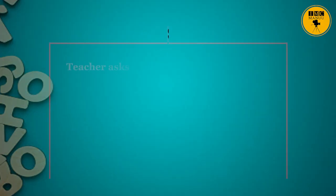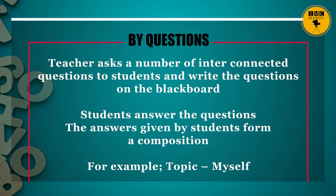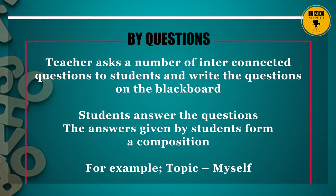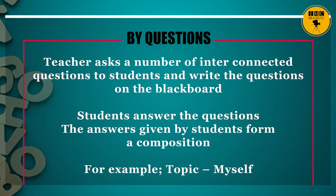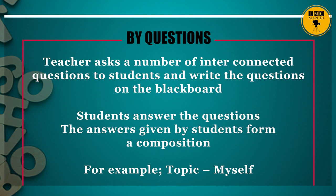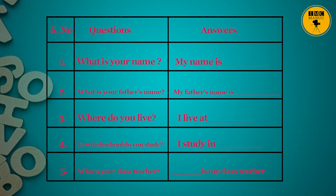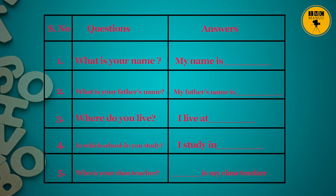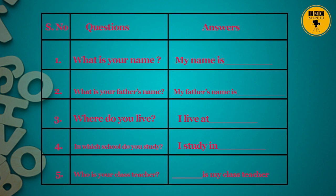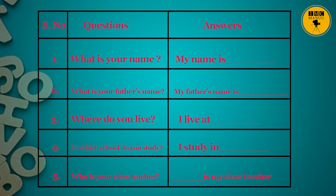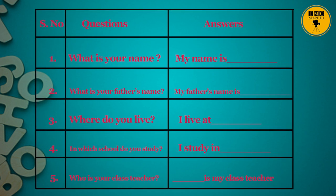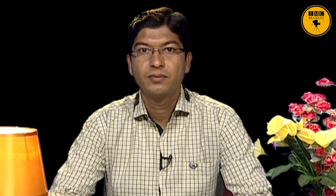Another technique of developing guided composition is by questions. The teacher asks a number of interconnected questions to students and writes them on the blackboard. Students answer the questions, and the answers given by students form a composition. For example, the topic 'Myself': What is your name? — My name is so and so. What is your father's name? — My father's name is so and so. Where do you live? In which school do you study? Who is your class teacher? The answers of all these questions form a composition on the topic. Teachers should also teach students about sentence and paragraph construction.